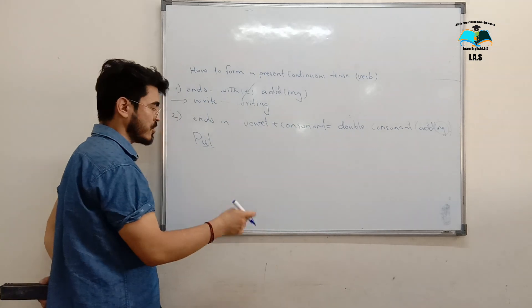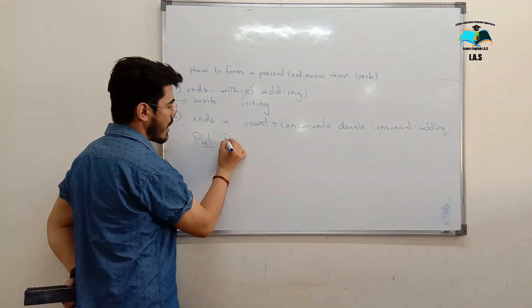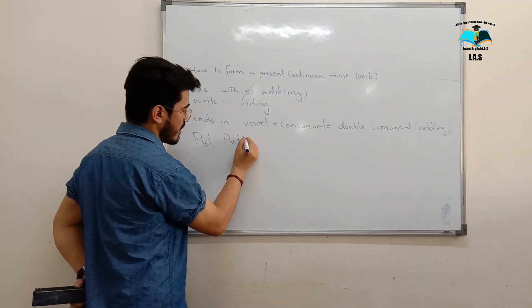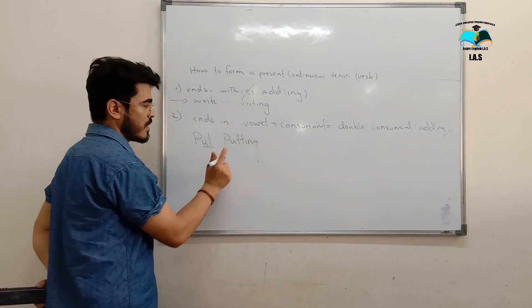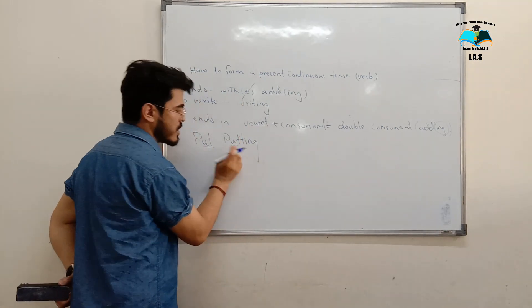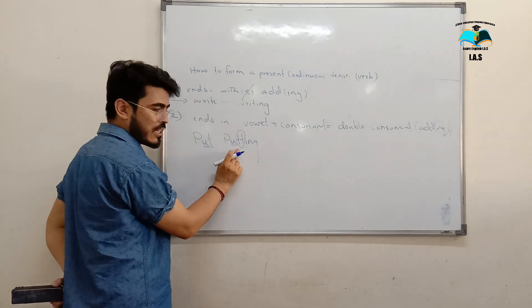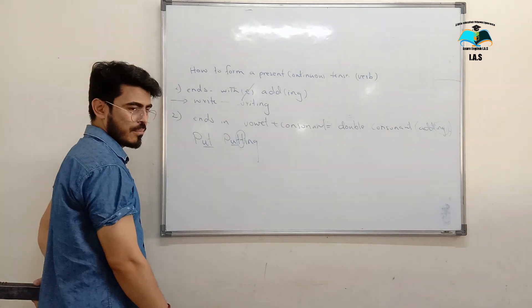I have to double the consonant, then add ING. Now, how to put into the Present Continuous Tense? Look, there is a vowel plus consonant. Then I double the consonant here, then I put ING: putting.